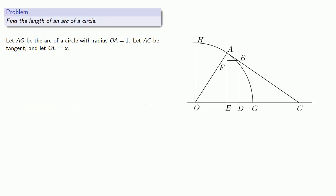So, for the arc length problem, let AG be the arc of a circle with radius OA equal to one, and let AC be the tangent line, and let OE equal x. This value OE is what Newton will later refer to as the base of the region. So, by similar triangles, we know that triangle ABF is similar to triangle OAE. So, AB is to FB as OA is to EA. Now, if this is a rectangle, FB and ED are the same. OA is the radius of the circle, that's one, and EA is square root one minus x squared.